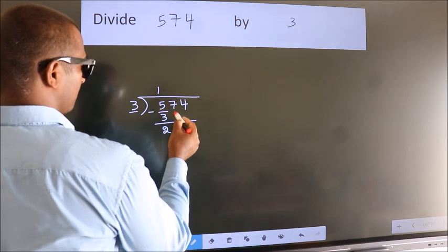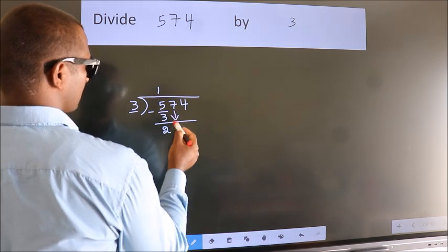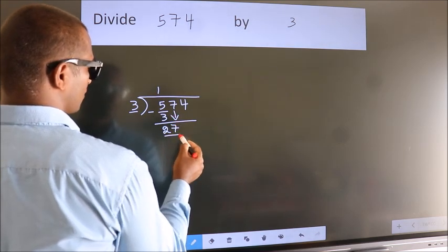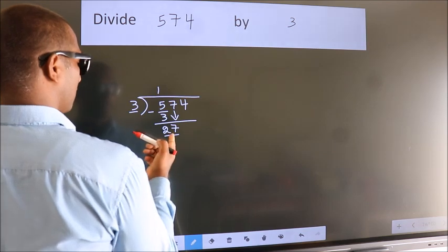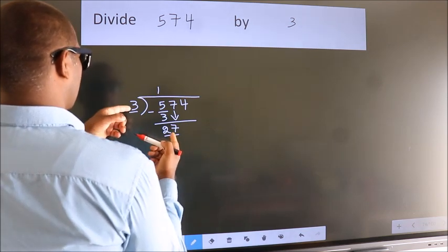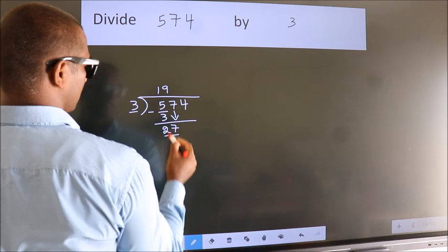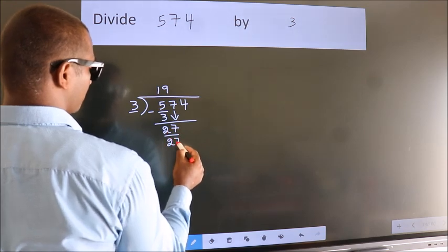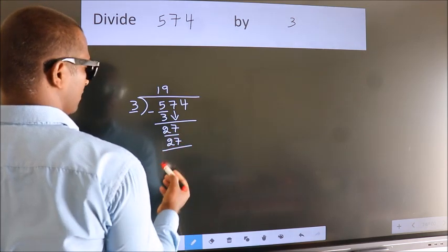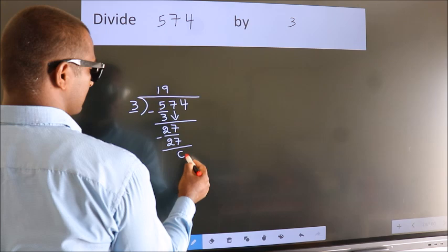After this, bring down the beside number. So, 7 down. So, 27. When do we get 27? In 3 table, 3 times 9 is 27. Now, we subtract. We get 0.